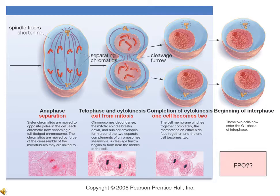At the end of cytokinesis, you end up with two cells. The two cells are going to be identical, and eventually you can no longer see individual chromosomes — they've become diffused into a complex network. The process then begins all over again. The end product of prophase, metaphase, anaphase, and telophase are two new cells with identical genetic information.